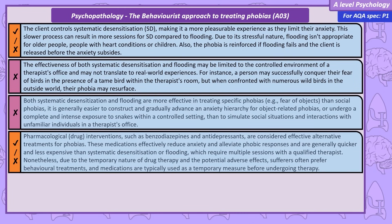Drugs are an alternative treatment for phobias. As an anxiety disorder, tranquilisers like benzodiazepines are used as well as antidepressants. These can lower anxiety and reduce the phobic response, and are often a quicker and more cost-effective treatment than systematic desensitisation or flooding, which require multiple sessions with a trained therapist. However, due to the temporary nature of drugs and their side effects, drugs are often not the preferred treatment and are likely to be a temporary solution before therapy.